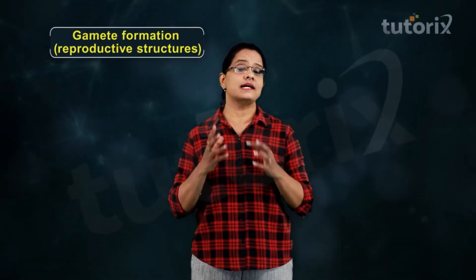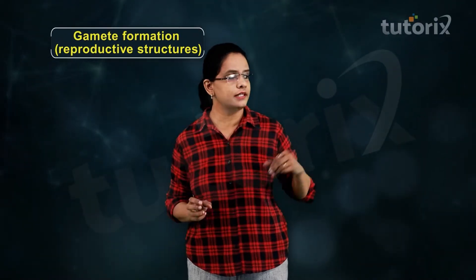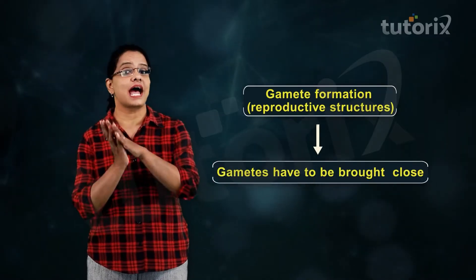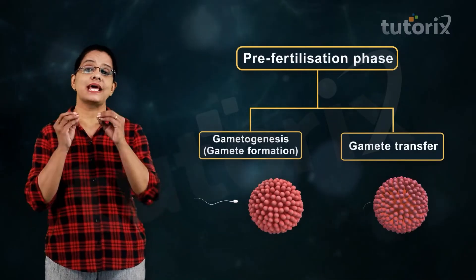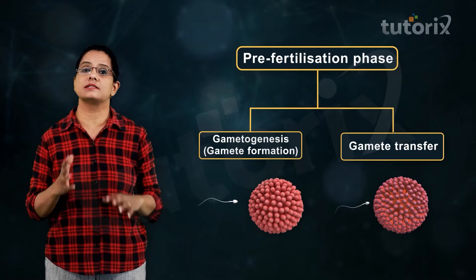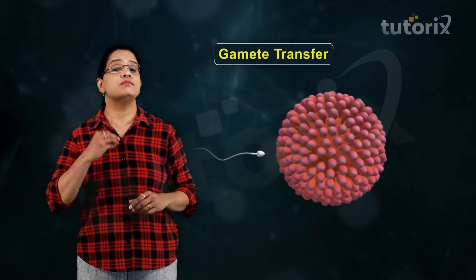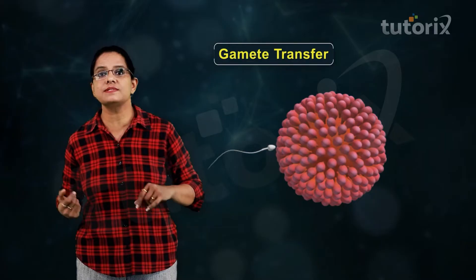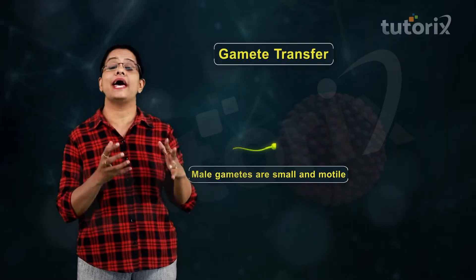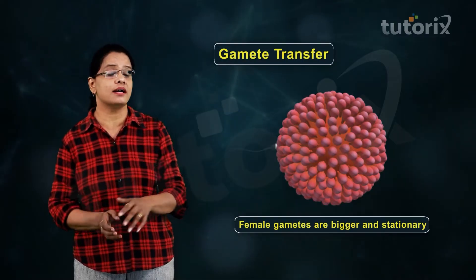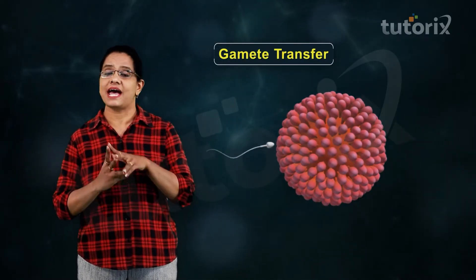After gamete formation, the male and female gametes have to be brought close together. The next process of pre-fertilization events is gamete transfer. In most sexually reproducing organisms, the male gametes are small and motile, while the female gametes are bigger in size and stationary.